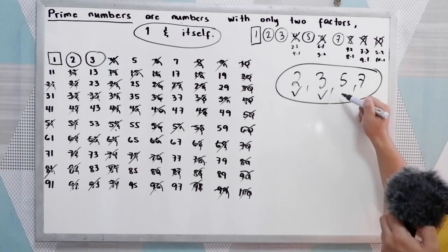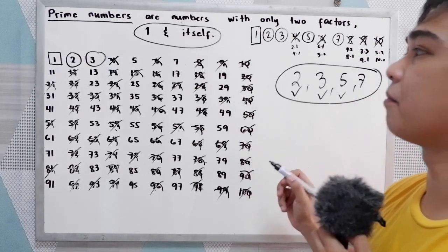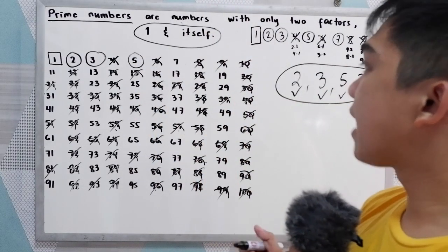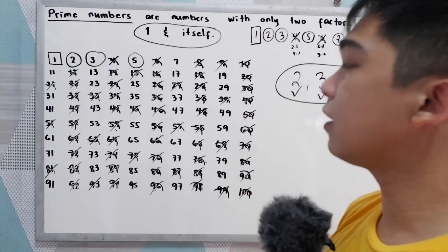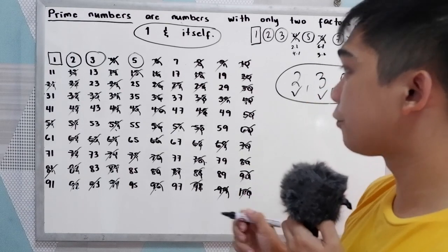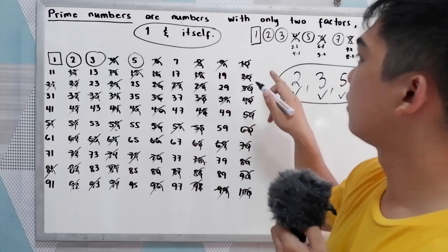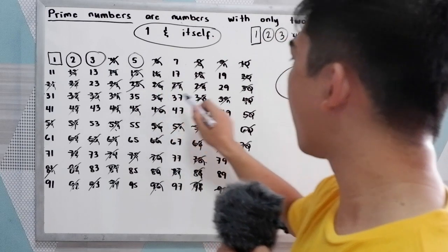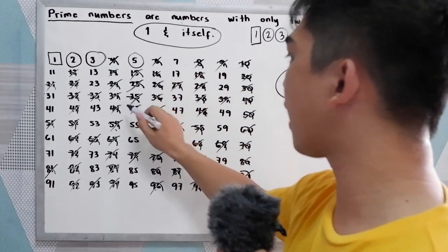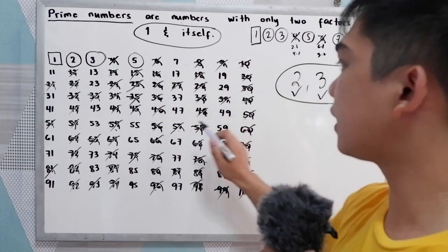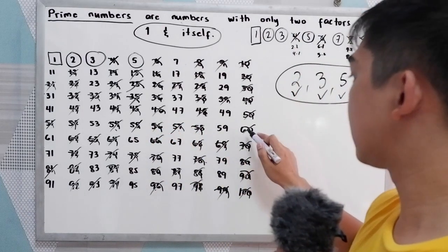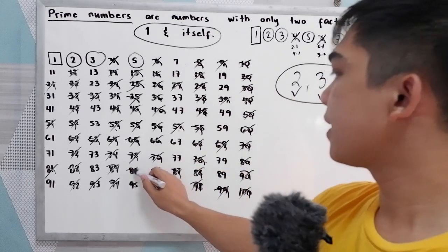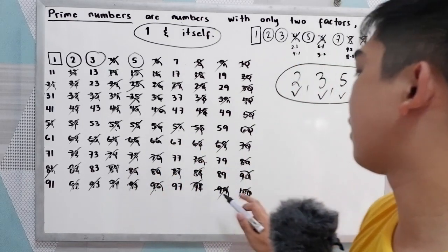Next is number 5. Since 5 is a prime number, we need to encircle 5 and cross all the multiples of 5. Multiples of 5 are: 10, 15, 20, 25, 30, 35, 40, 45, 50, 55, 60, 65, 70, 75, 80, 85, 90, 95, and 100.